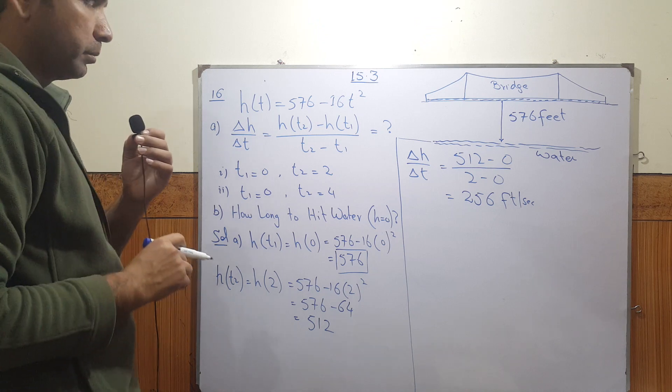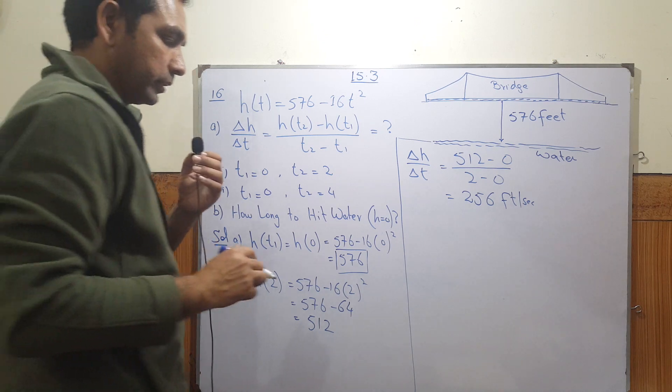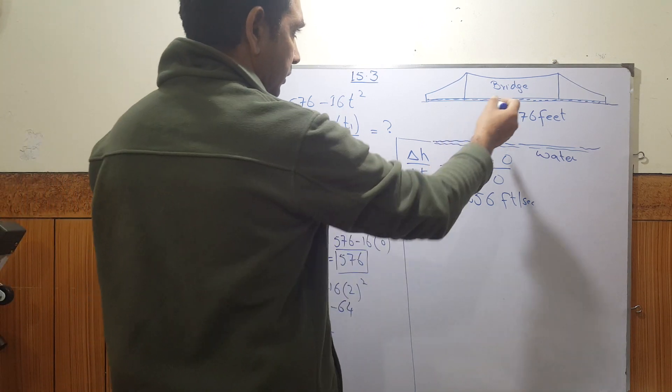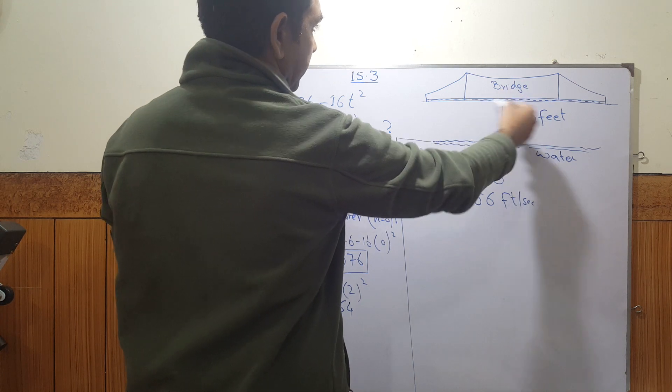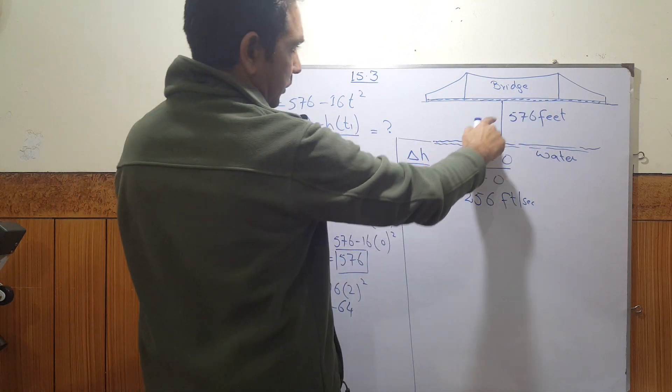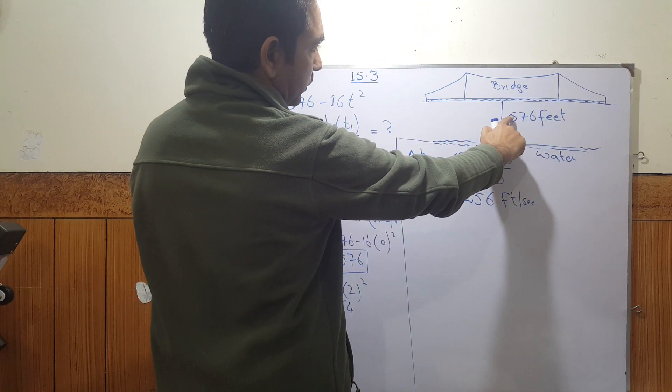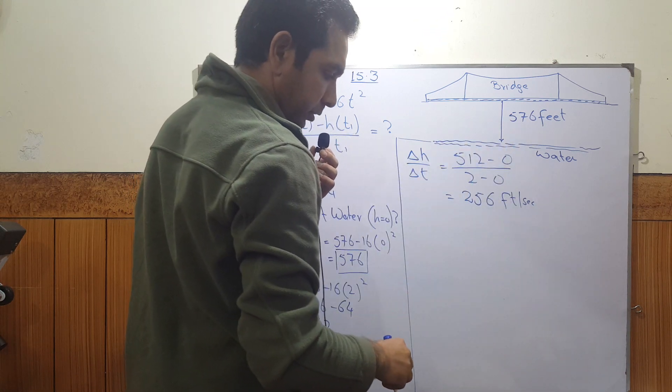Okay, this is a question about a bridge and they're saying that an object is dropped from this bridge into the water.